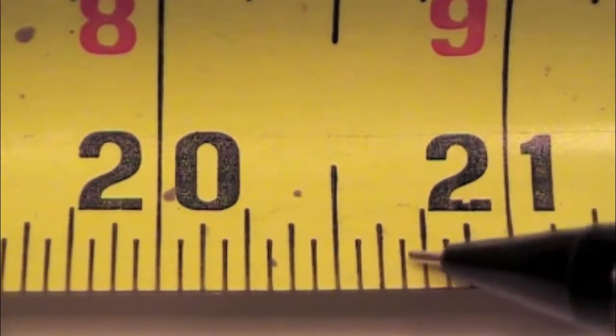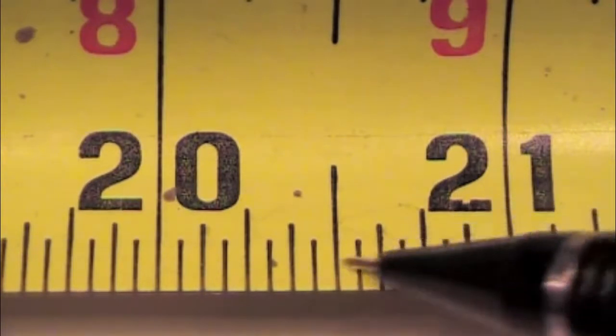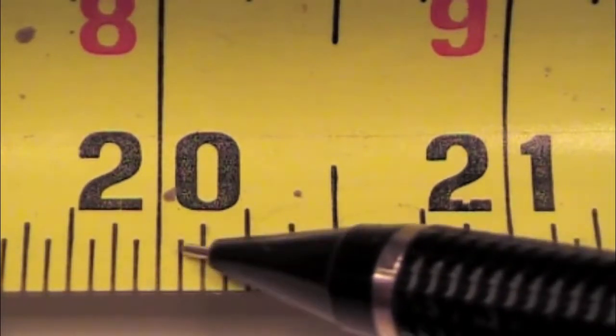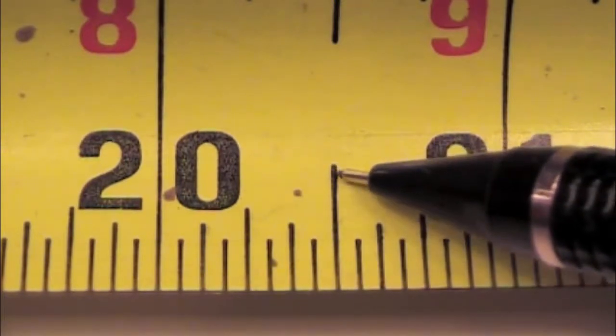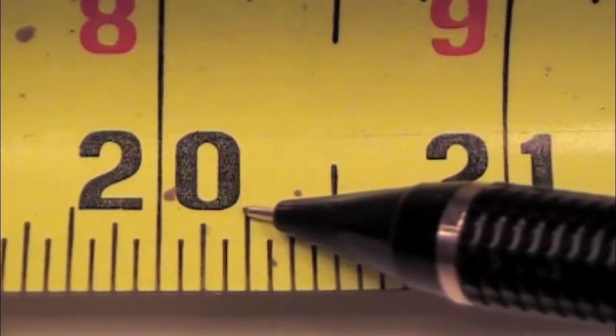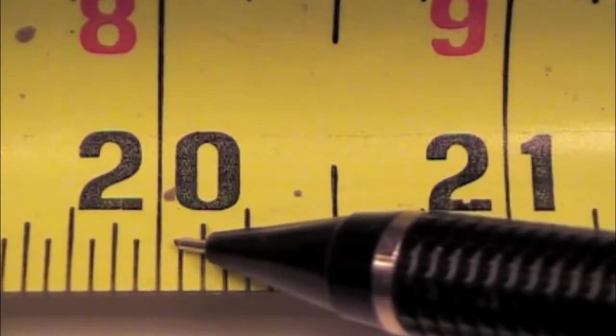So each one of these lines, each one of these spaces is a sixteenth of an inch at the shortest line. You'll notice that the largest line is half an inch, then quarter, then an eighth, then a sixteenth.